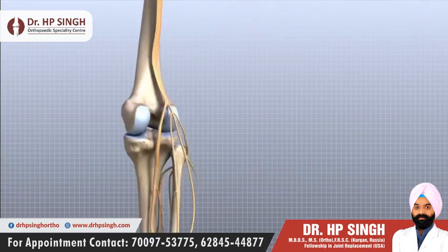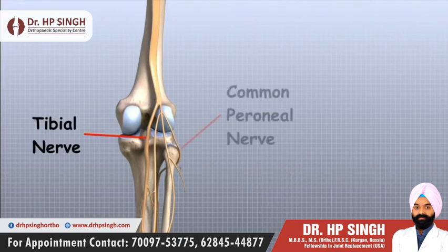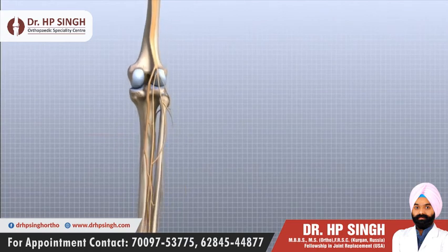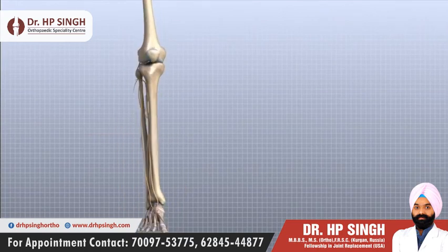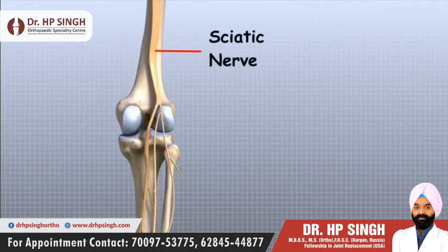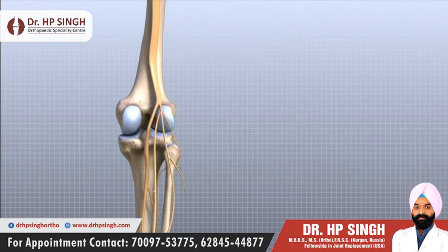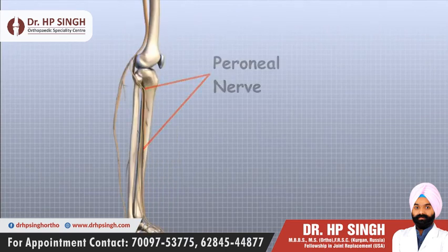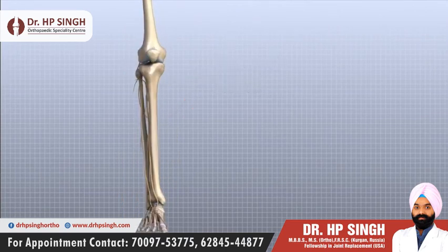The most important nerves around the knee are the tibial nerve and the common peroneal nerve in the back of the knee. These two nerves travel to the lower leg and foot, supplying sensation and muscle control. The large sciatic nerve splits just above the knee to form the tibial nerve and the common peroneal nerve. The tibial nerve continues down the back of the leg, while the common peroneal nerve travels around the outside of the knee and down the front of the leg to the foot. Both of these nerves can be damaged by injuries around the knee.